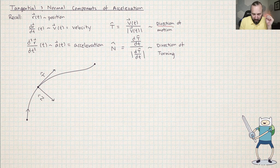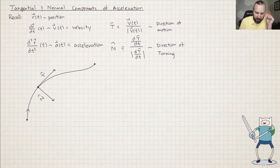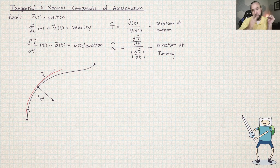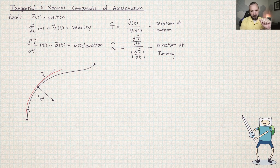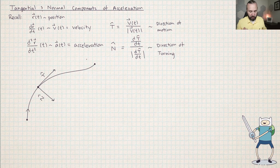I'm using the word 'direction' and the hat symbol to drive home the fact that these are objects of magnitude 1 — they're unit vectors. N represents the direction that the particle is turning in. You could imagine a particle moving along a path, gradually banking to the right, and N is pointing to the right. For another part of the path, N would be pointing in that direction. So we think of N as the direction that the particle is turning.